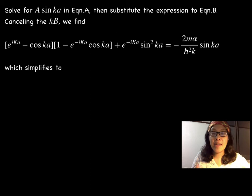We solve for A sin(ka) in equation A. Afterward, we substitute the resulting expression to equation B. We then cancel the kb term. The equation can be simplified into this fundamental formula.